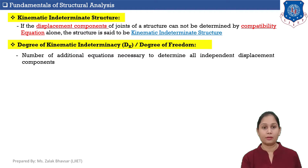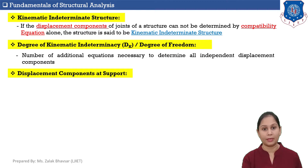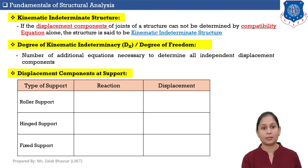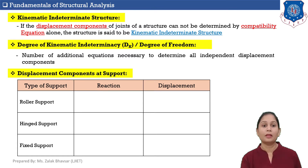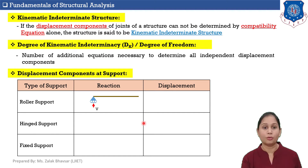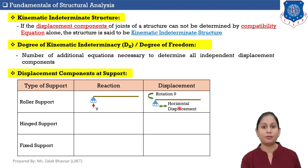Before calculating degree of kinematic indeterminacy of different structures, let us discuss displacement components at supports. There are three major types of supports: roller support, hinge support, and fixed support. Displacement components at a support depend on reactions at that support. Roller support always offers one vertical reaction, so it does not allow the beam to displace in the vertical direction. Therefore, the number of displacements possible at a roller support will be one rotation and one horizontal displacement.